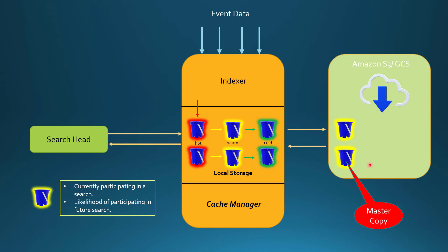This is how the cache manager determines which warm buckets to keep in the indexer cache. When it identifies that the likelihood of a particular bucket participating in a search is very low, it evicts those buckets from the indexer cache — since we already have a copy in remote storage. If in the future we need a bucket for a search — say we run a long time-range search — and that bucket is not present in the cache, it will copy that particular bucket from remote storage to the indexer cache. All warm buckets residing in remote storage serve as the master copy.